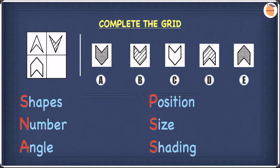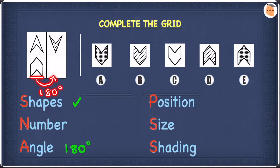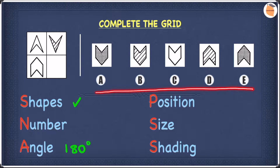For this example, let's start by looking at the similarities and differences between the top two shapes. In terms of similarities, they're both the same shape. In terms of differences, the angle is different — the shape on the left has been rotated 180 degrees to get to the shape on the right. So for our question, this shape must be rotated 180 degrees to get our answer. We can cross off D and E because they're not rotated at all.